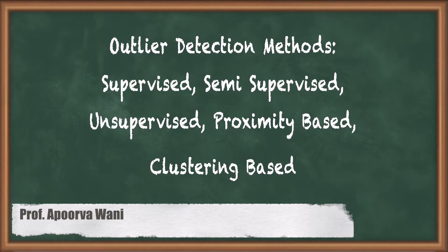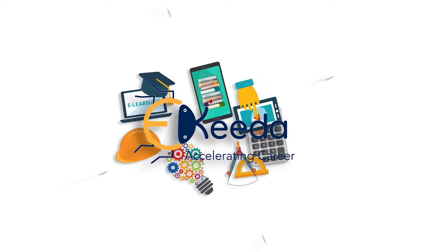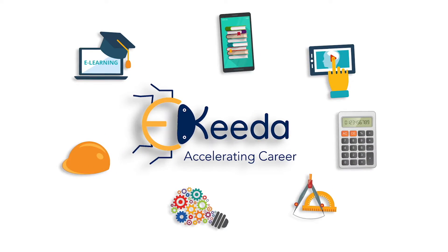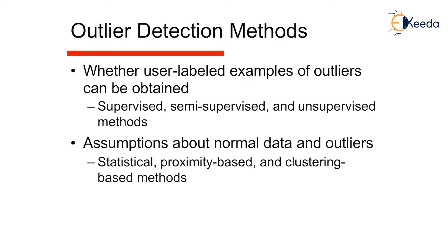Hello friends. In this video we are going to see a very important topic: outlier detection methods, through which we can identify how outliers are present in a dataset. Outlier detection methods can be supervised, semi-supervised, or unsupervised. Assumptions about normal data and outliers can be examined using statistical, proximity-based, and clustering-based methods.